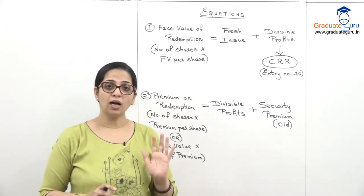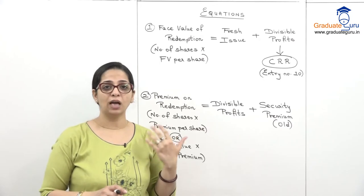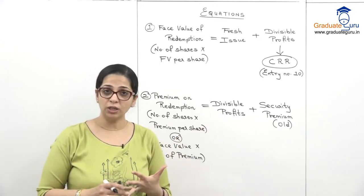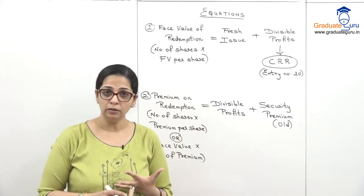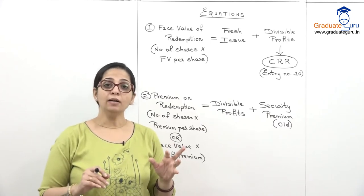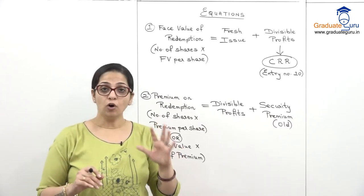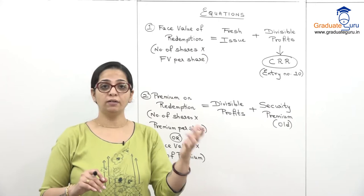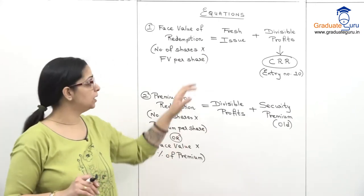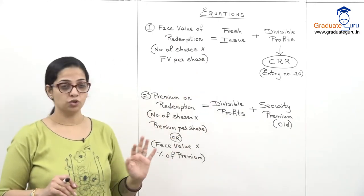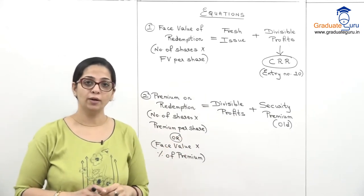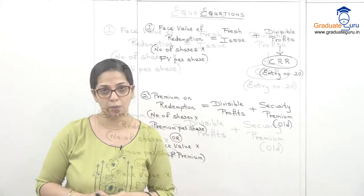These are the two main equations we will make at the beginning of every sum. Whether the question asks for journal entries or a balance sheet, we will first form these equations before starting the journal entries. Take down these equations and then we will go ahead with the first sum.